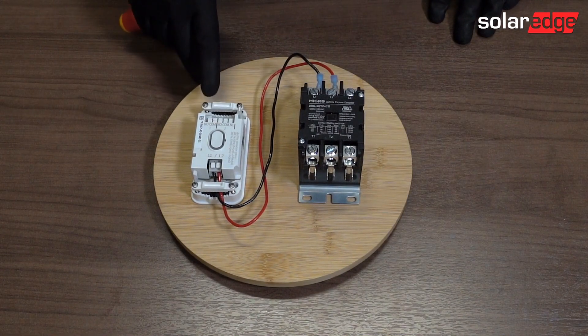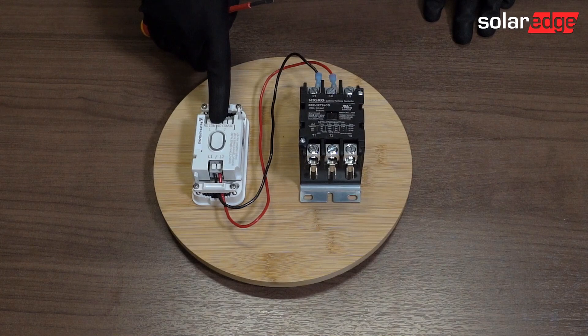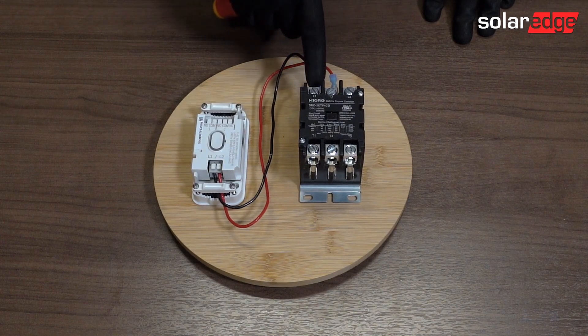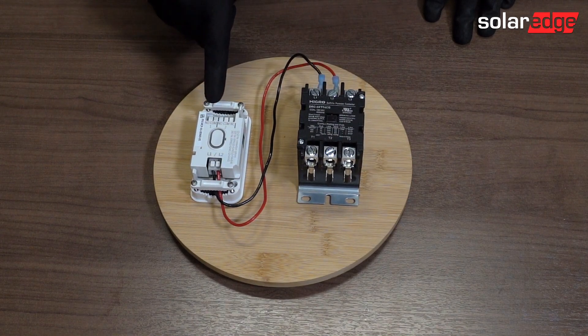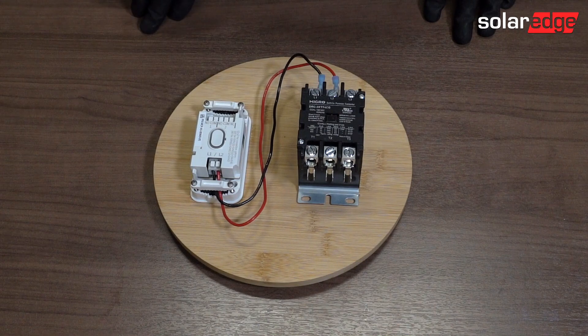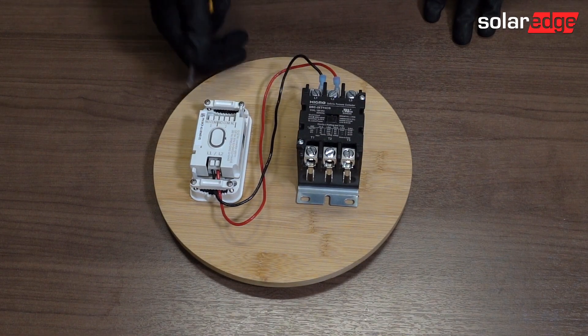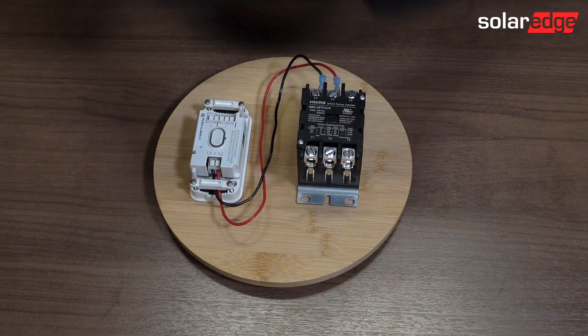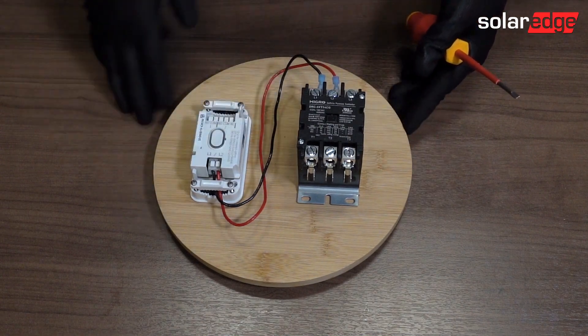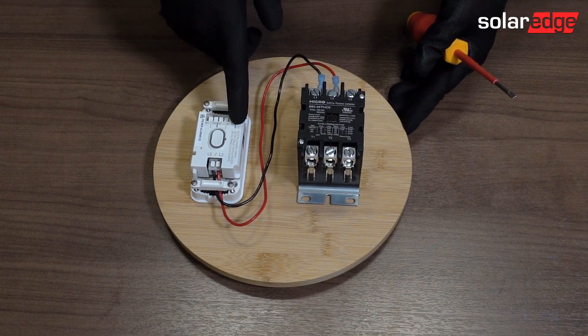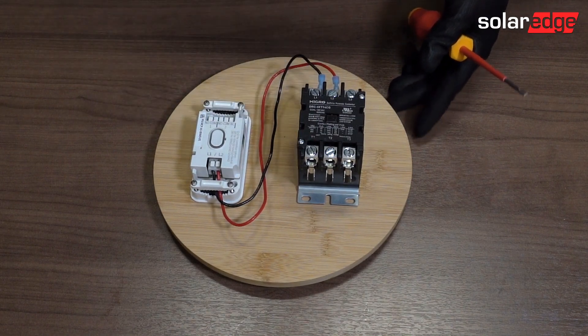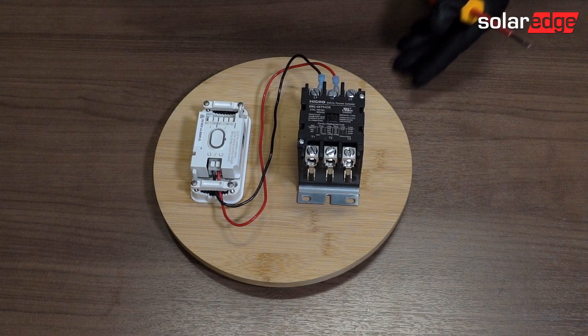So now let's go ahead and do the control side. So we're going to go common to the line one, and we're going to go normally open to coil. So the coil is going to be on the bottom here. Now, normally open is the condition of the coil. So that's how you remember, when I want to control the coil, it's going to be either normally open or normally closed. And that's what I want the load controller to remember.